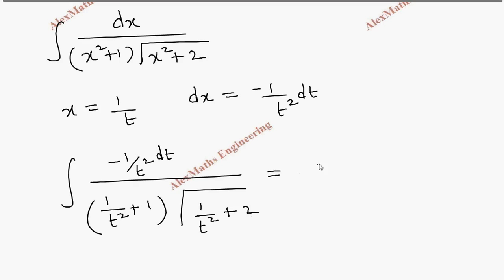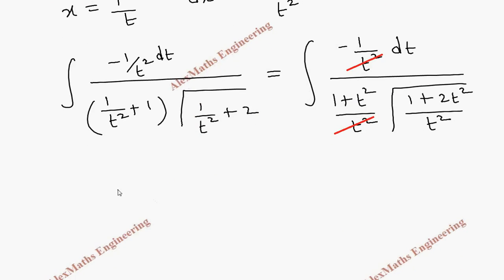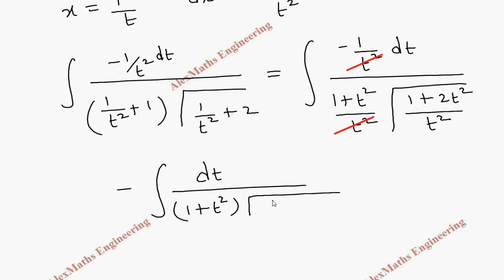The numerator is minus 1 by t² dt as is. Taking LCM, the denominator becomes 1 plus t² by t², and similarly 1 plus 2t² by t² for the square root term. We can cancel t² from numerator and denominator. So we get minus integral dt divided by 1 plus t² times root of 1 plus 2t². Taking the square root separately, t comes to the numerator.